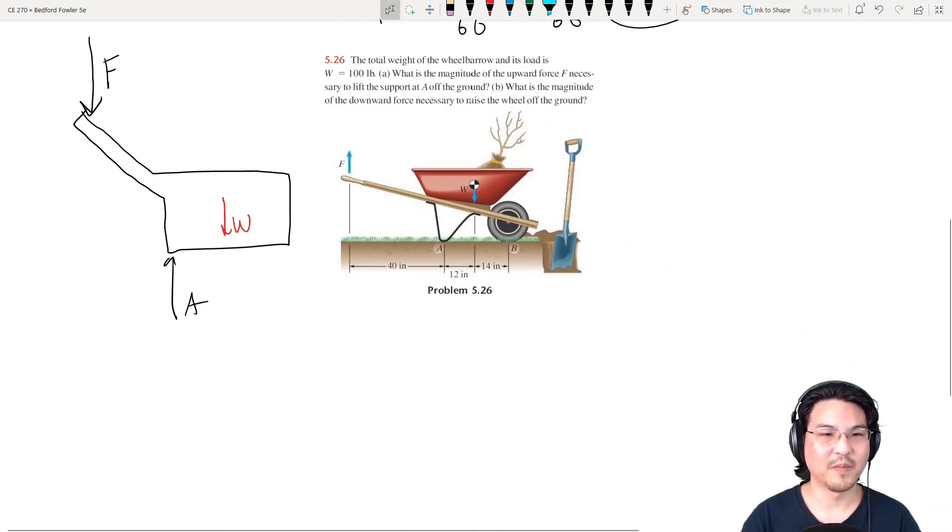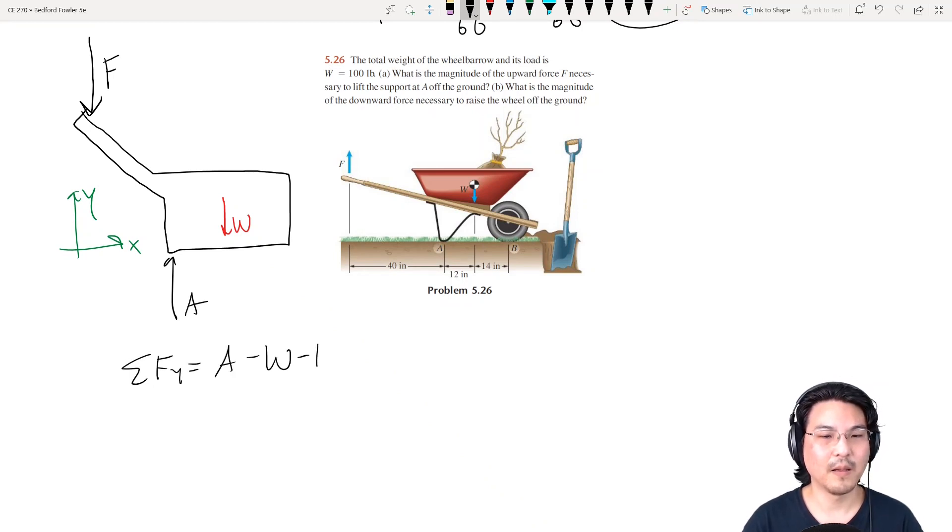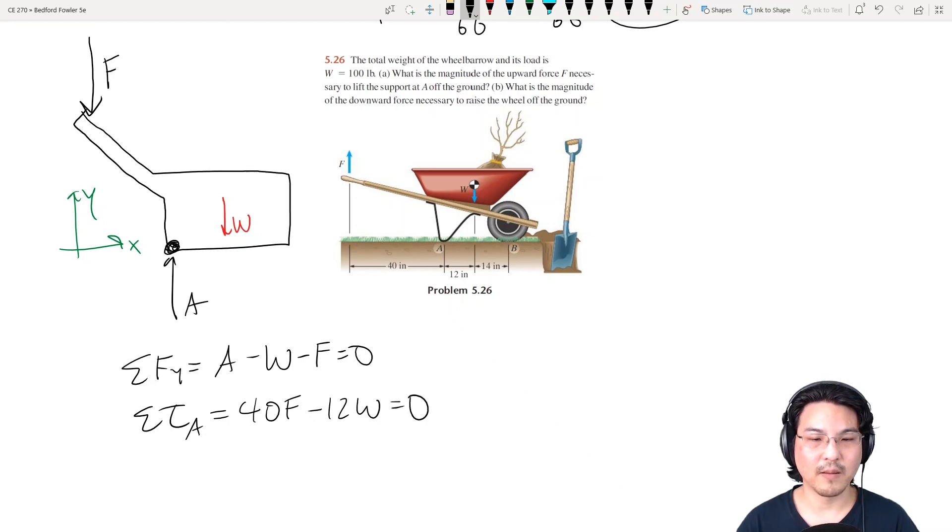So now I'll pick coordinates. Let's sum forces in Y. Let's sum torque about anywhere we want. How about here? Okay, so the torque due to F would be positive. The torque due to W would be negative.